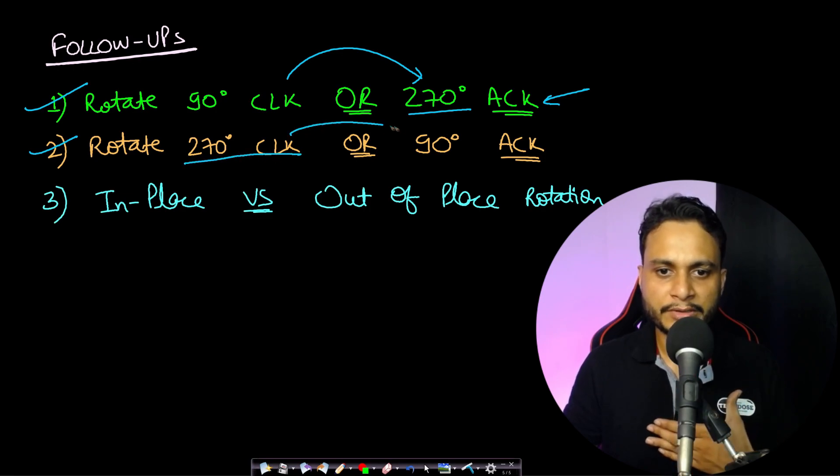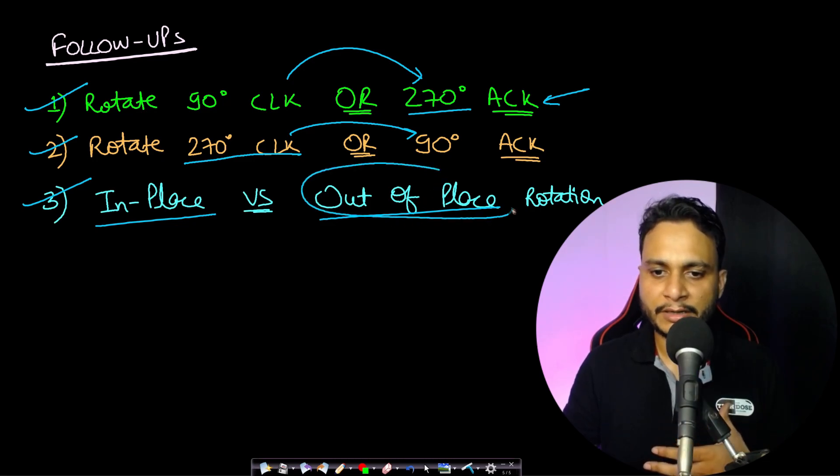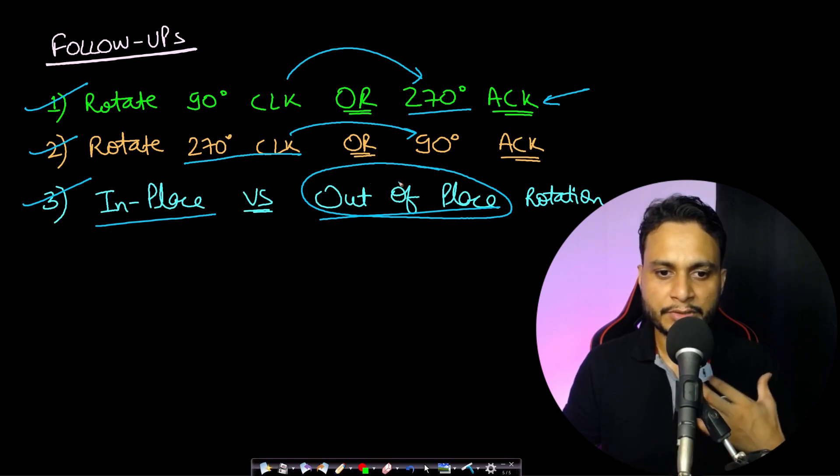Rotate a matrix by 270 degrees in the clockwise direction, or the same thing can be written as 90 degrees in the anti-clockwise direction. Again, you can be asked to discuss on in-place algorithms versus out-of-place algorithm.